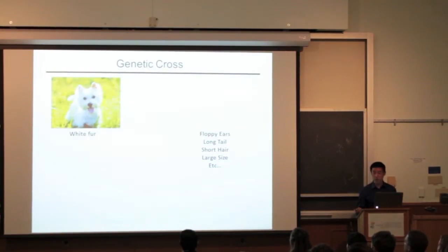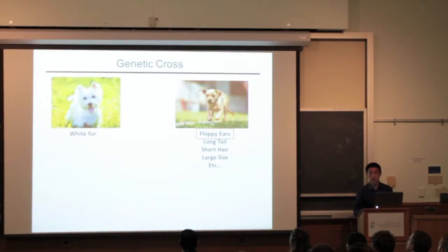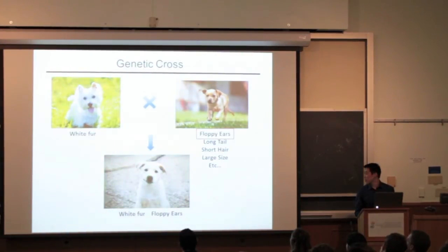Like floppy ears, long tail, short hair, etc. For this example, let's focus on the floppy ears. You take these two parents, mate them, let them have offspring, and then choose from the many offspring, the dog with the white fur, floppy ears.